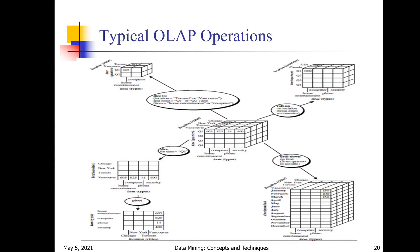I am explaining these OLAP operations with an example. Here in the center we have a three-dimensional cube with three dimensions: time, item, and location. Time consists of quarter one, quarter two, quarter three, quarter four. Items along the y-axis: home, entertainment, computer, phone, security. Locations along the z-axis: Vancouver, Toronto, New York, Chicago. This is the central 3D cube representing the data warehouse.